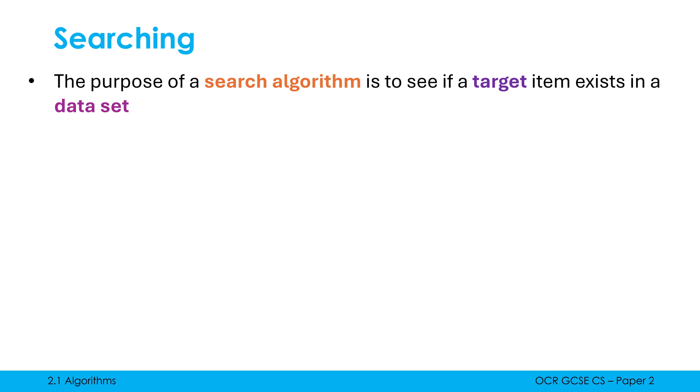The term data set refers to all of your data collectively. So it could be a massive file, it could be a database and the target is what you are searching for specifically. At its essence, a search algorithm just confirms or denies the target is in the data set. But even the most simple ones will often also say where the target is, assuming it's found.